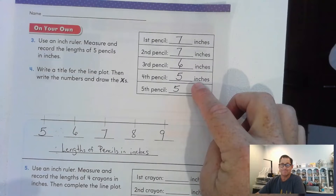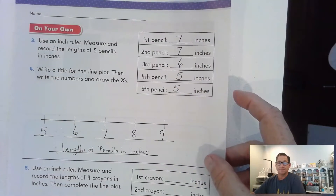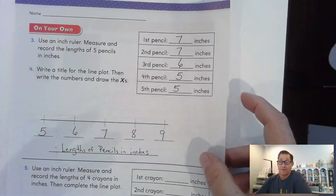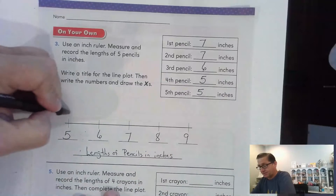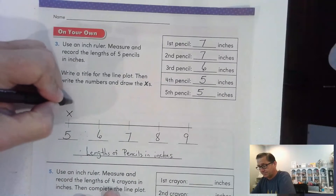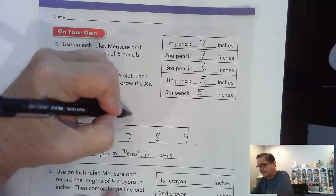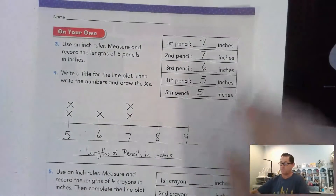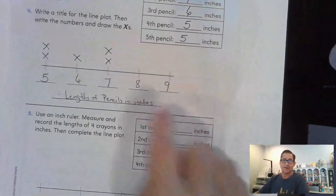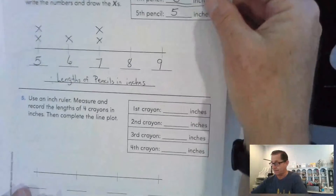I only have three different numbers: five, six, and seven. I have two pencils that are five inches, one that is six inches, and two that are seven inches. Simple as that — I don't have any pencils larger than seven inches.